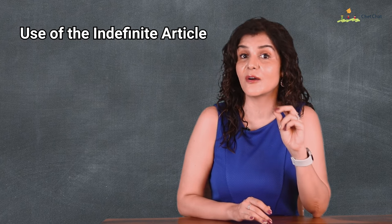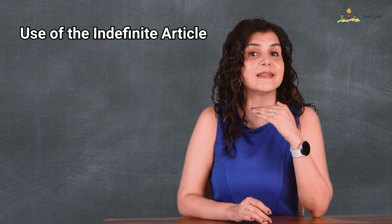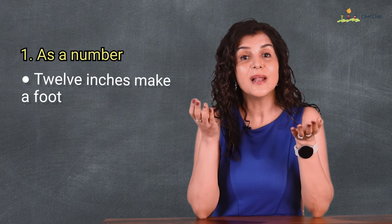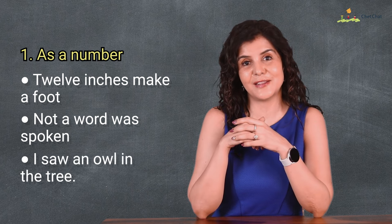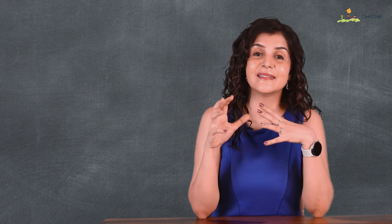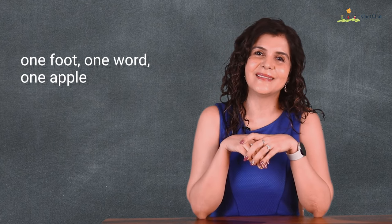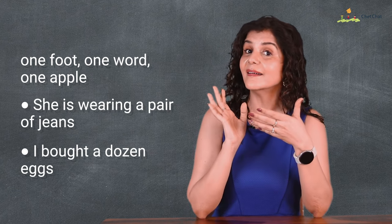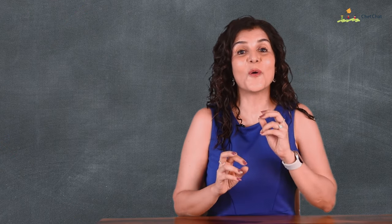Remember, we use a and an before singular countable nouns and not before uncountable or plural nouns. The first usage of a and an is as a number — for example: 12 inches make a foot; not a word was spoken; I saw an owl in the tree. A and an denote one in the numerical sense. She's wearing a pair of jeans; I bought a dozen eggs — a dozen means one dozen.